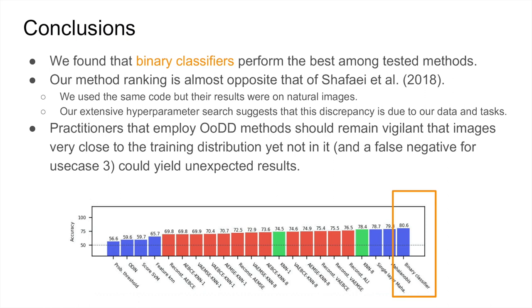To conclude, we find that binary classifiers perform the best among all our tested methods. Also, we find that our ranking of methods is almost the opposite of that reported by Sheffey in 2018. We used the same code, but their analysis was on natural images. Our extensive hyperparameter search suggests that this discrepancy is in fact due to the data and tasks in the medical setting. We caution practitioners that employ out-of-distribution detection methods that images very close to the training distribution but not in it may not be detected and could cause a model to produce unexpected results. Finally, our work highlights the need for further research on detecting these types of data distributions.